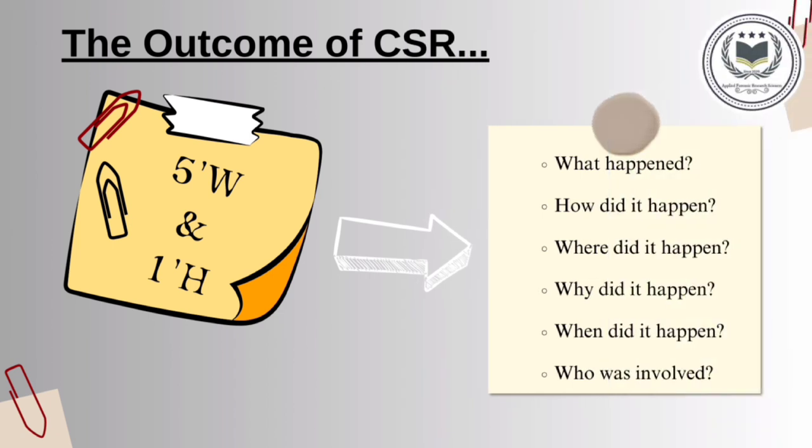Now the outcome of crime scene reconstruction. After the whole crime scene process, we will get answers to the questions most commonly asked in a crime, called the five W's and one H: what happened in the crime, how did the crime happen, where did the crime happen, why did the crime happen, when did the crime happen, and who did the crime.